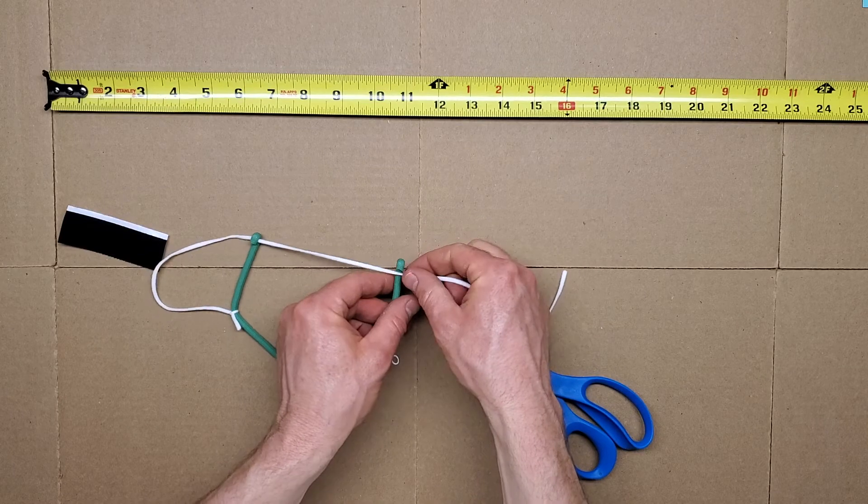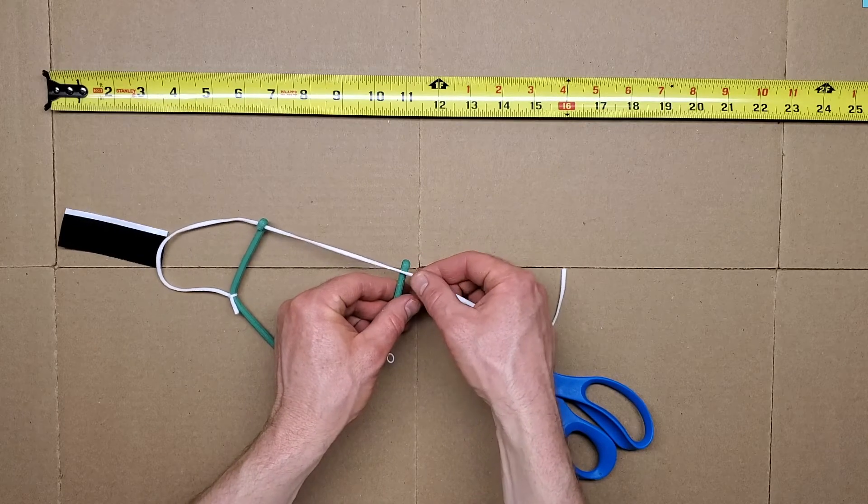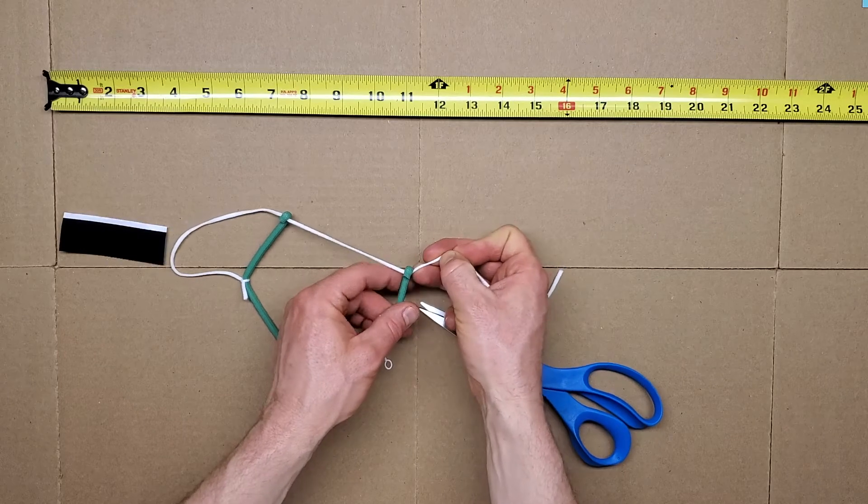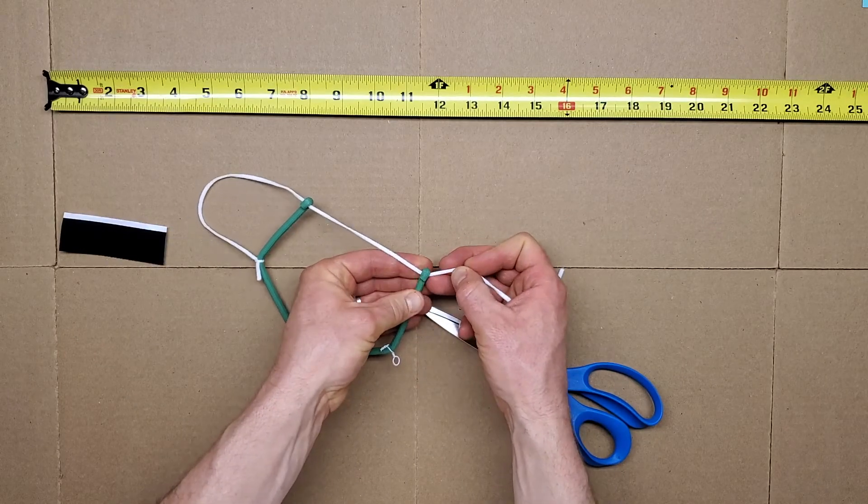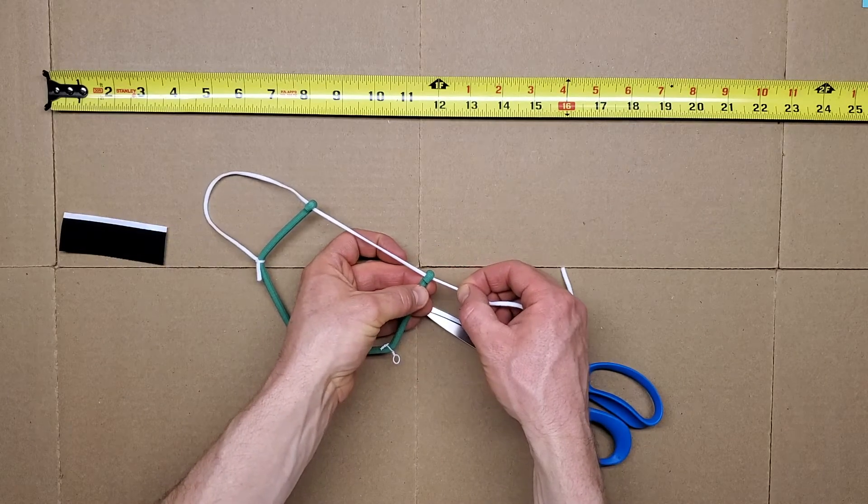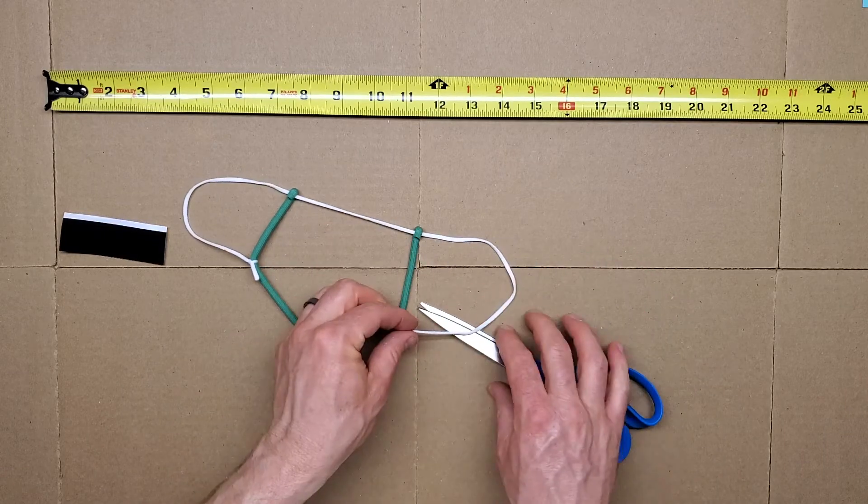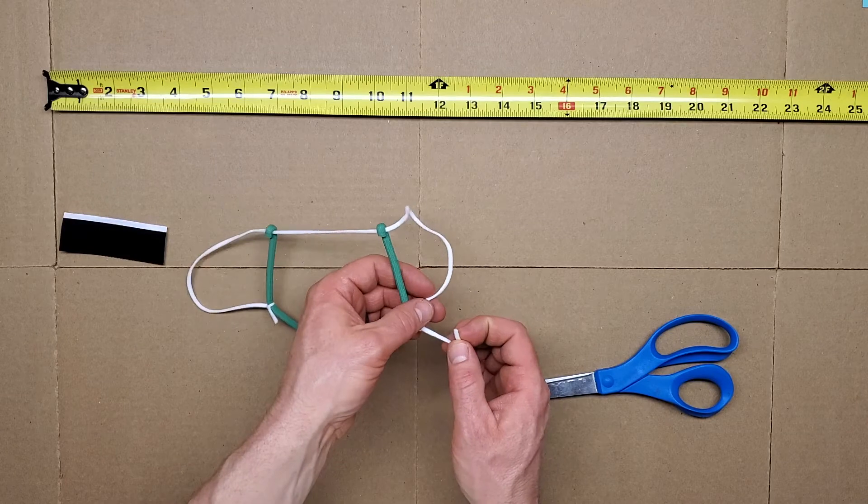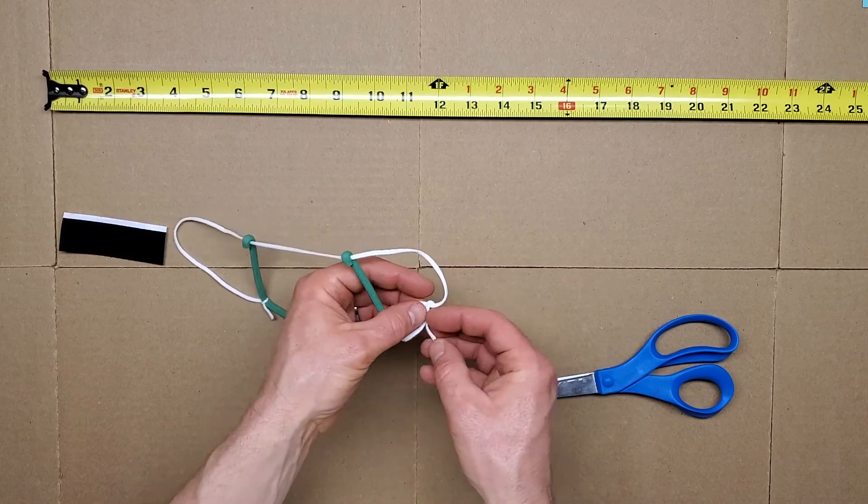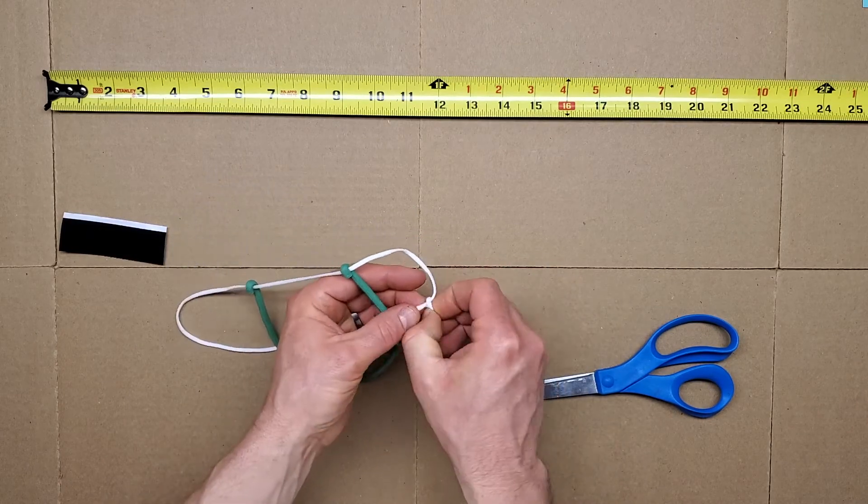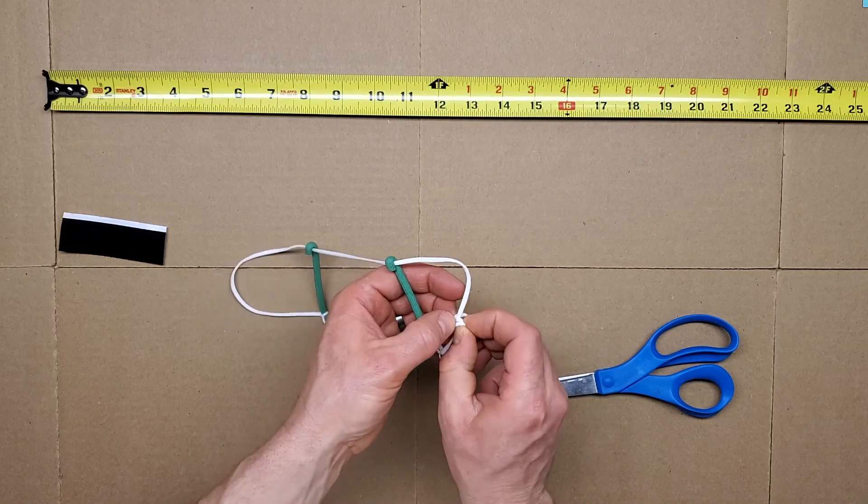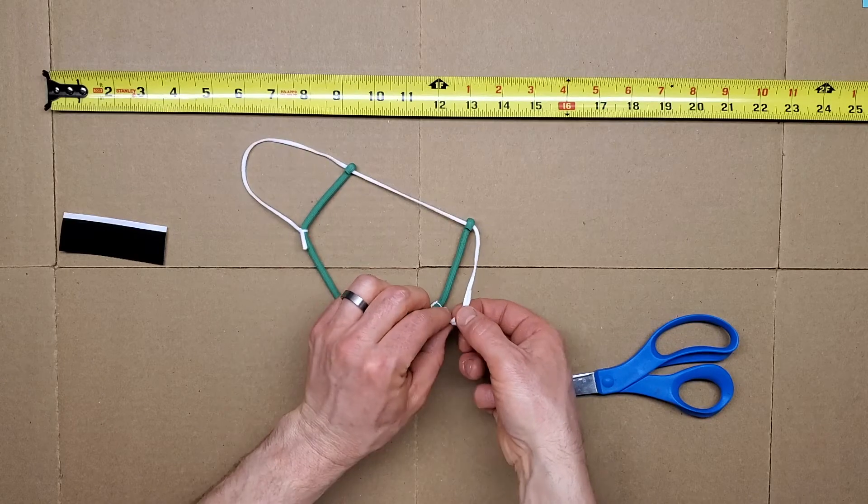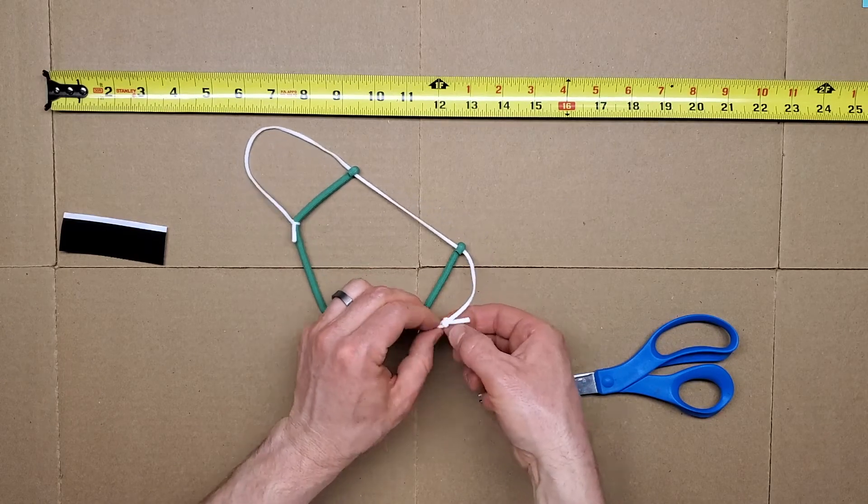And then same on the other one. I'm going to feed it into that loop. Squeeze that so it pulls, but you have to pull kind of hard. And then finally through the twist tie loop.